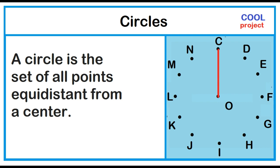All the points on a plane equidistant from point O, like C, D, E, F, G, H, I, J, K, L, M, N, form a round shape.